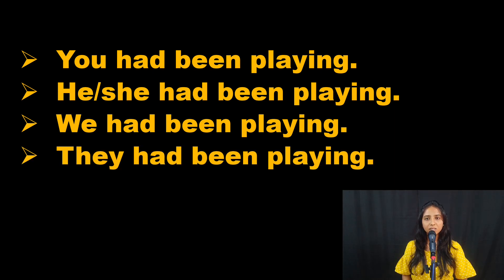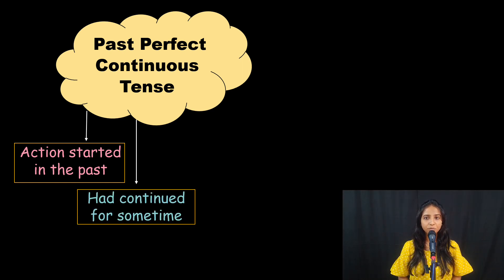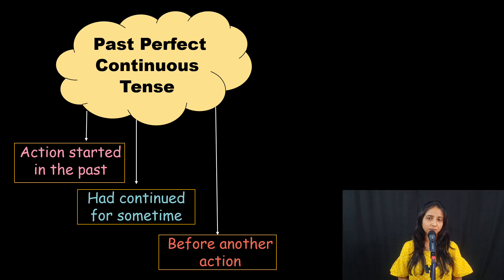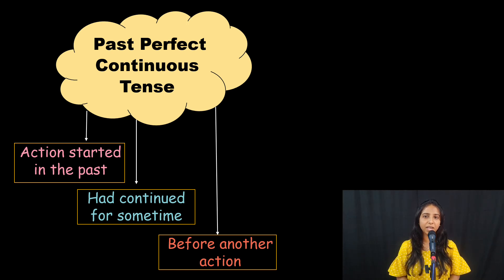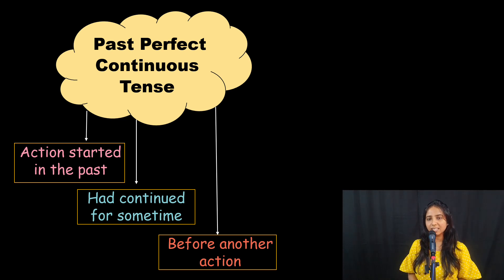Now let's look at its usage. An action started in the past and had continued for some time before another action. I know what you're thinking — it sounds complicated, right? Don't worry, I'll keep my words. We'll apply this definition to an example sentence and it's going to be simple.